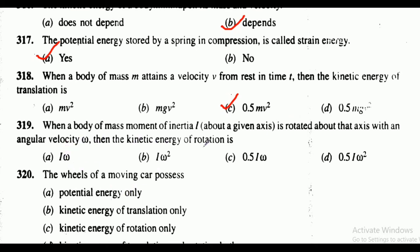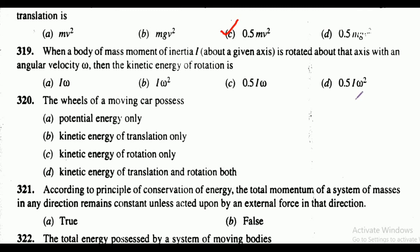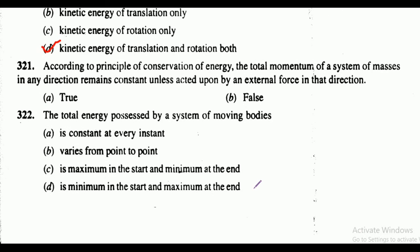Question 319: when a body of mass moment of inertia I about a given axis is rotated about that axis with angular velocity omega, the kinetic energy of rotation is — the correct answer is option D, that is 0.5 I omega square. Question 320: the wheel of a moving car possesses — the correct answer is option D, kinetic energy of translation and rotation both.